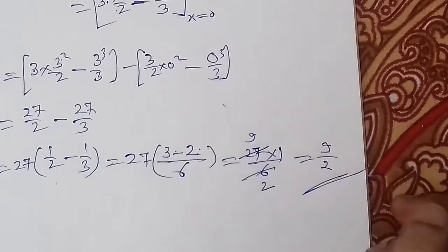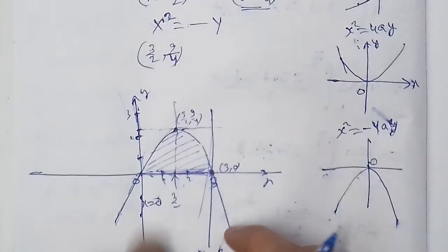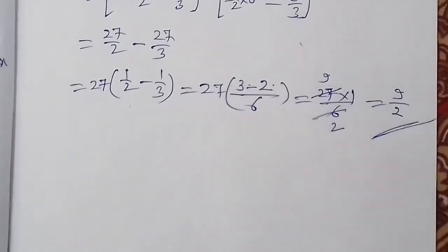So the area under the curve, between the x-axis and the ordinates x equals 0 and x equals 3, is 9/2. Thank you very much for listening. Wa akhiru da'wana alhamdulillahi rabbil alameen.